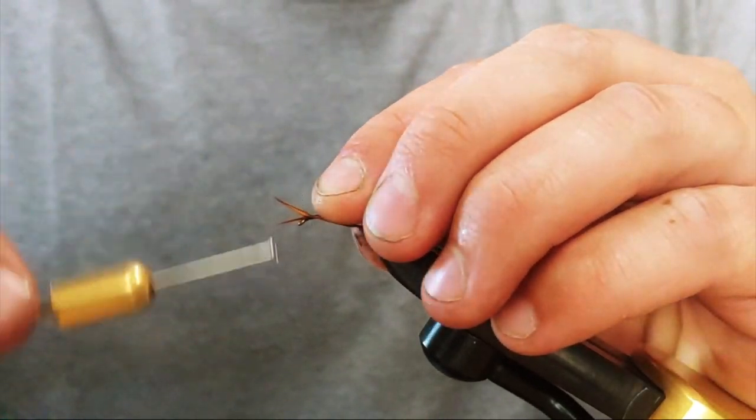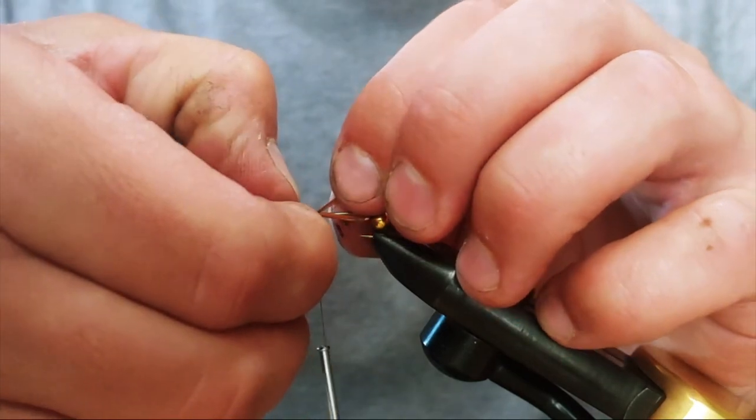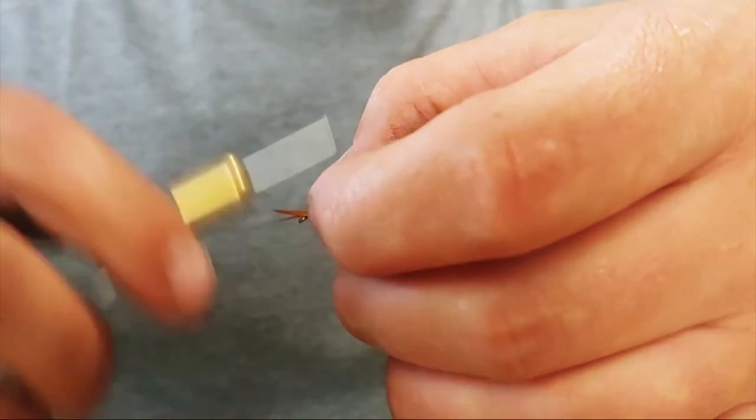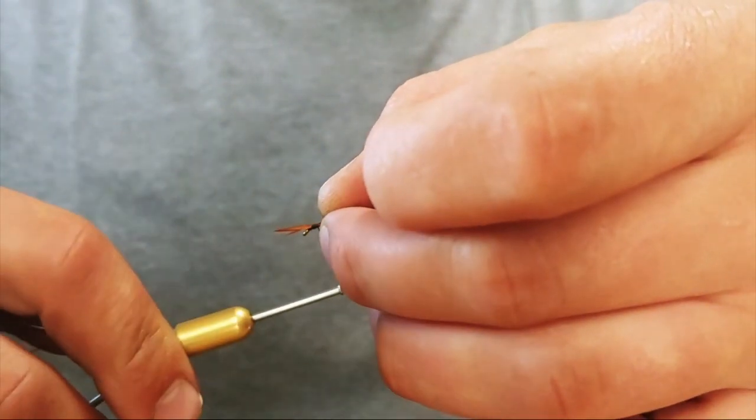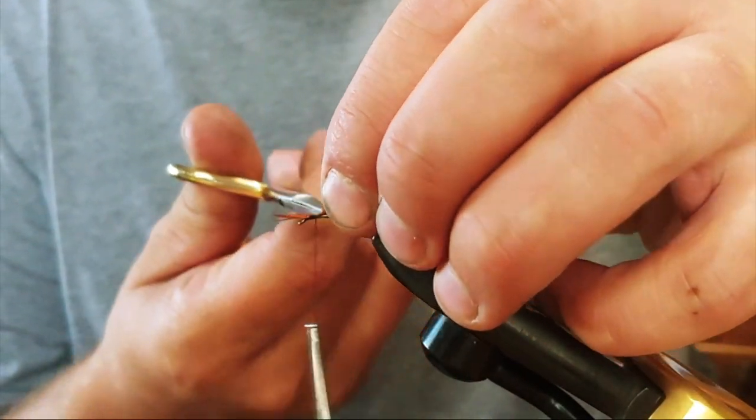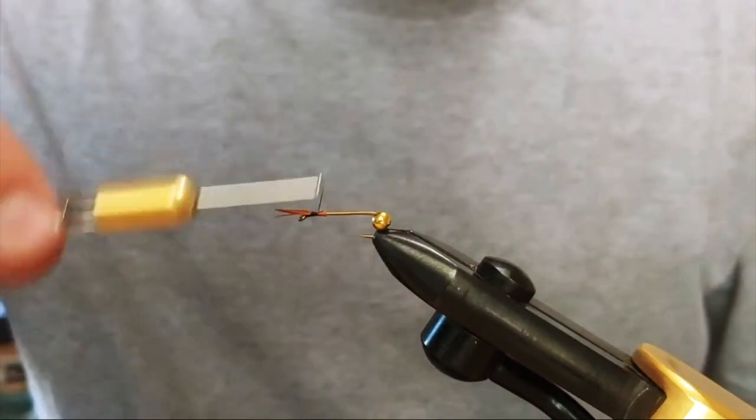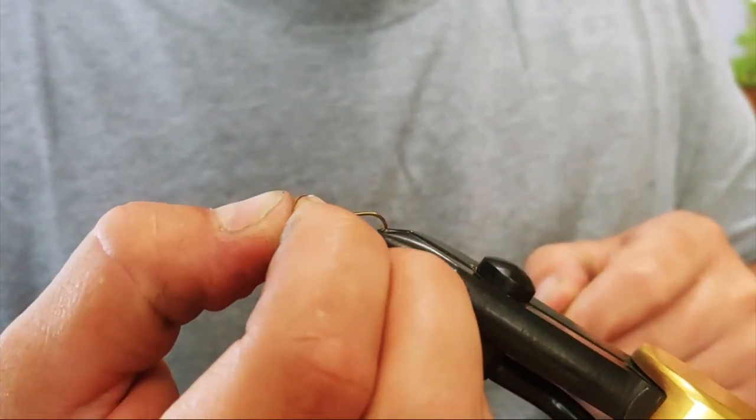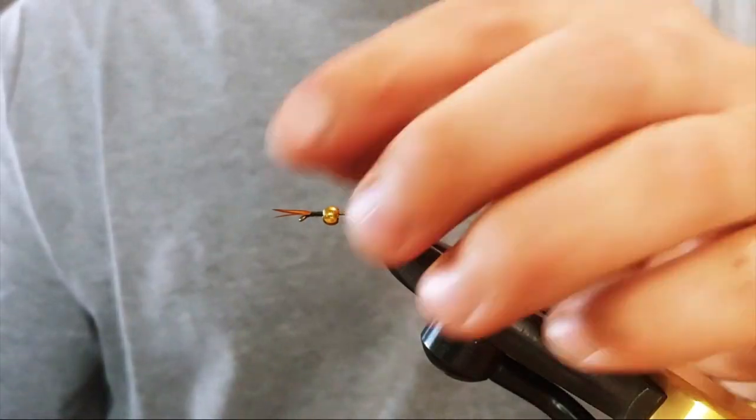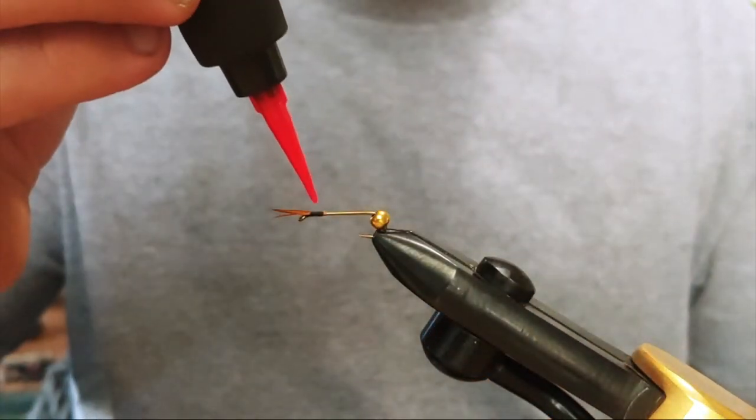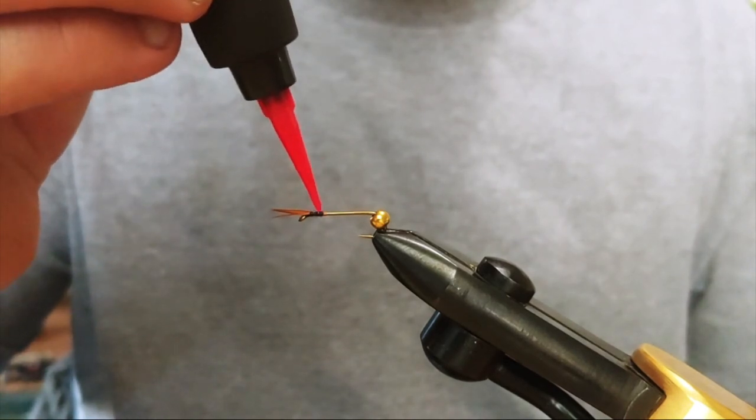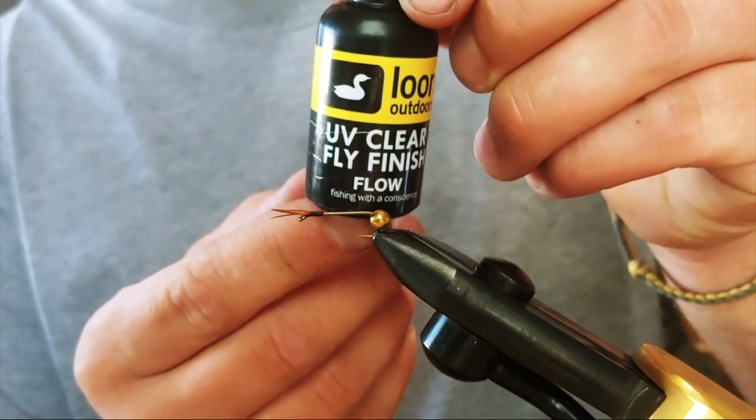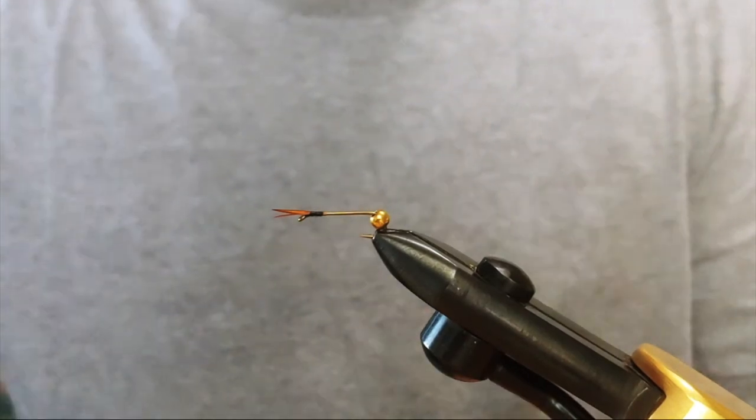Just kind of get it on there with nice one or two wraps and then just tweak it to your liking. Trim those ends off a little bit. A little bit of UV resin. I'm using the Flow, I really like it for a head cement.